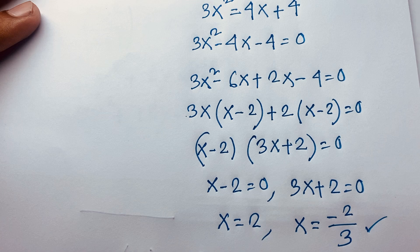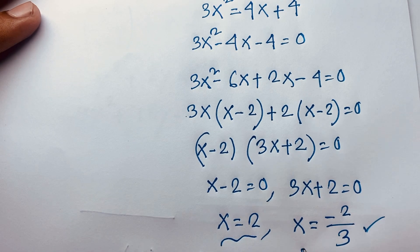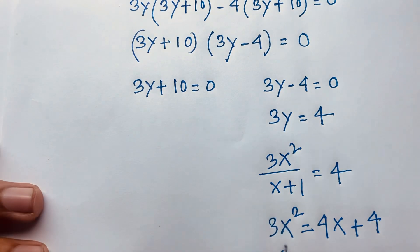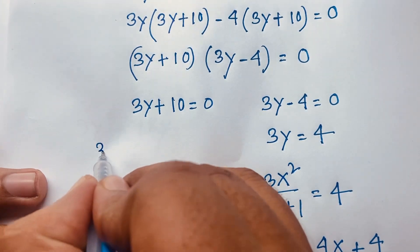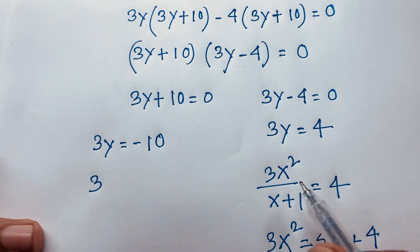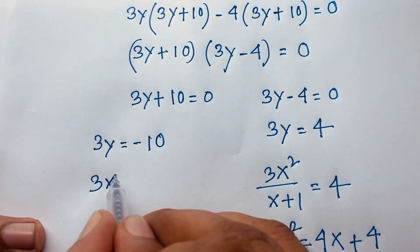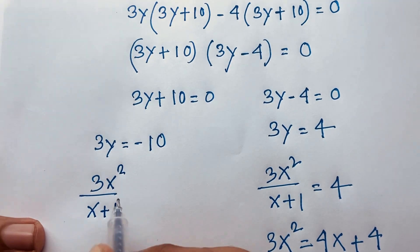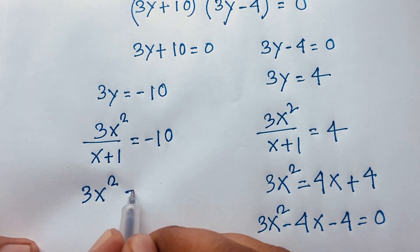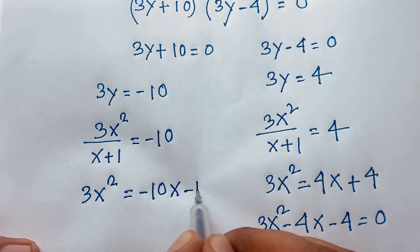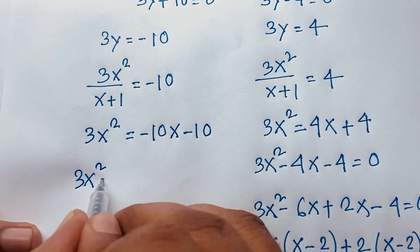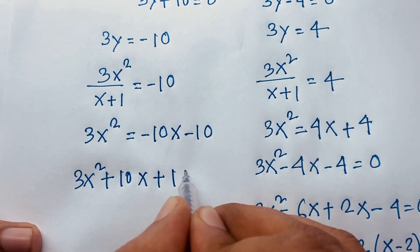These are the values of x. In this problem both x = 2 and x = −2/3 are real solutions, no complex numbers here. For the other case, 3y + 10 = 0, so 3y = −10. Since y = x²/(x+1), we get 3x²/(x+1) = −10, so 3x² = −10x − 10, giving 3x² + 10x + 10 = 0.